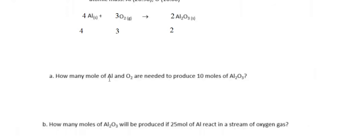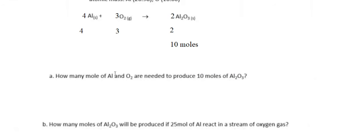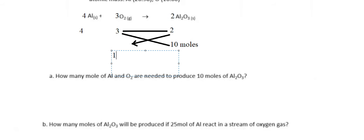Question: how many moles of aluminum and oxygen are needed to produce 10 moles of aluminum oxide? We put 10 moles here. To find the moles of oxygen, we multiply 10 by 3 then divide by 2. So 10 × 3 ÷ 2 equals 15 moles of oxygen.